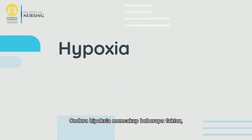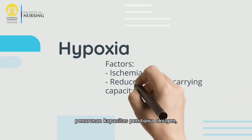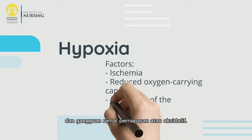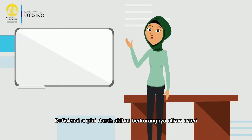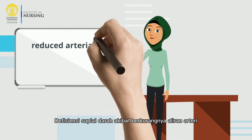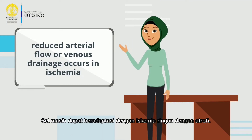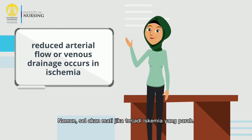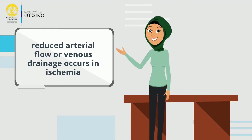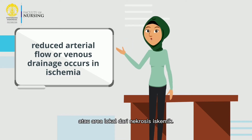Hypoxia injury includes several factors such as ischemia, reduced oxygen carrying capacity, and disruptions of the respiratory or oxidative chain. Blood supply deficiency due to reduced arterial flow or venous drainage occurs in ischemia. Cells can still adapt to mild ischemia; however, the cell will die if there is severe ischemia. Ischemia may result in infarctions, or localized areas of ischemic necrosis.